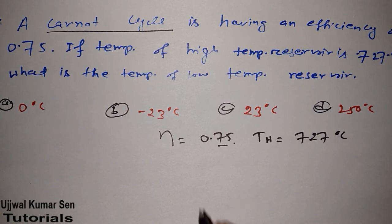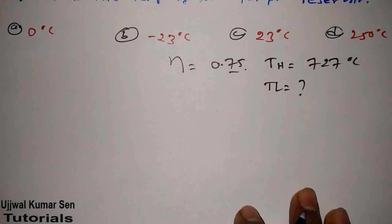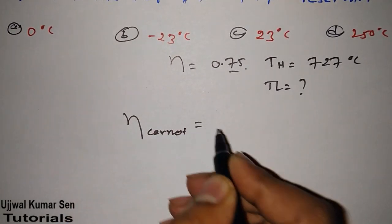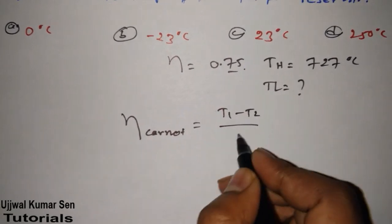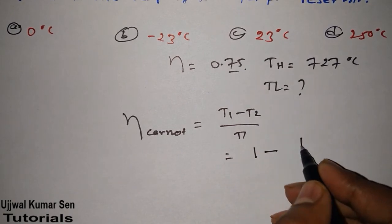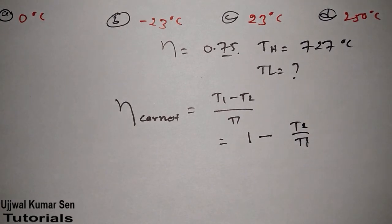We know efficiency of Carnot is equal to T1 minus T2 by T1, which we can also say as 1 minus T2 by T1. Now T2 means TL, T1 means TH, remember that.